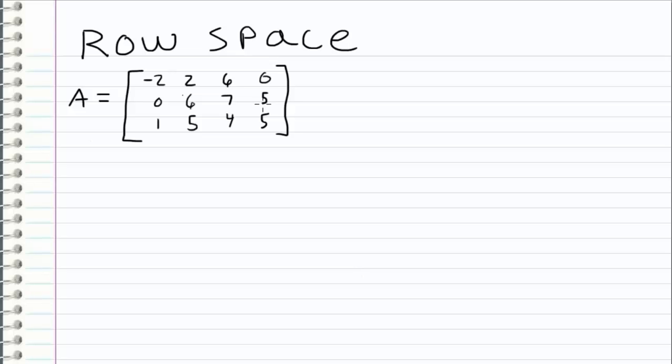In the previous video, we talked about the column space of a matrix. We said that the column space of our matrix is a subspace of R m, where m is the number of rows that we have, because each vector has m components.